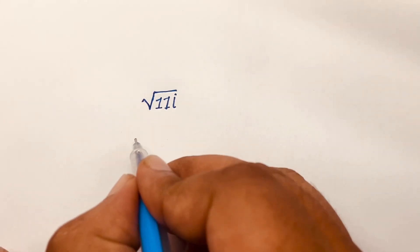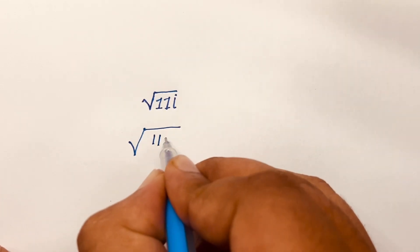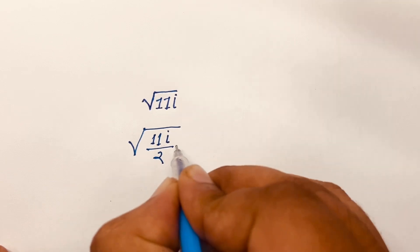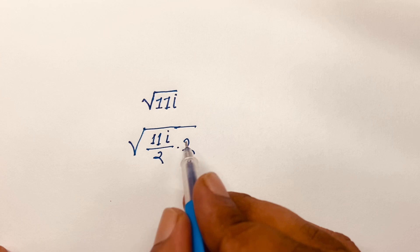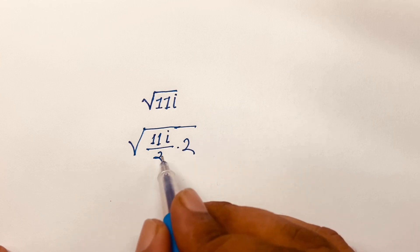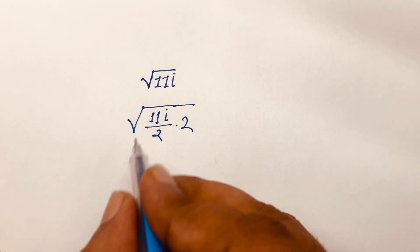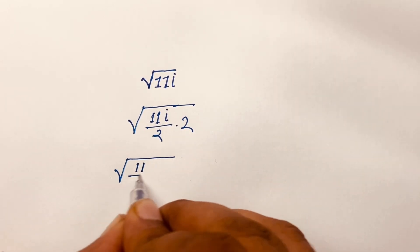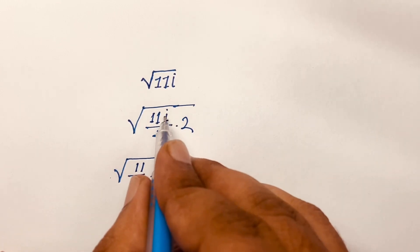How to solve square root of 11i? First, I can write it as square root of 11i over 2 times 2. I divide by 2 and again multiply by 2. When the 2s cancel we get back the previous line. Then I can say it will be square root of 11 over 2 times 2i. I just move the i to this place.